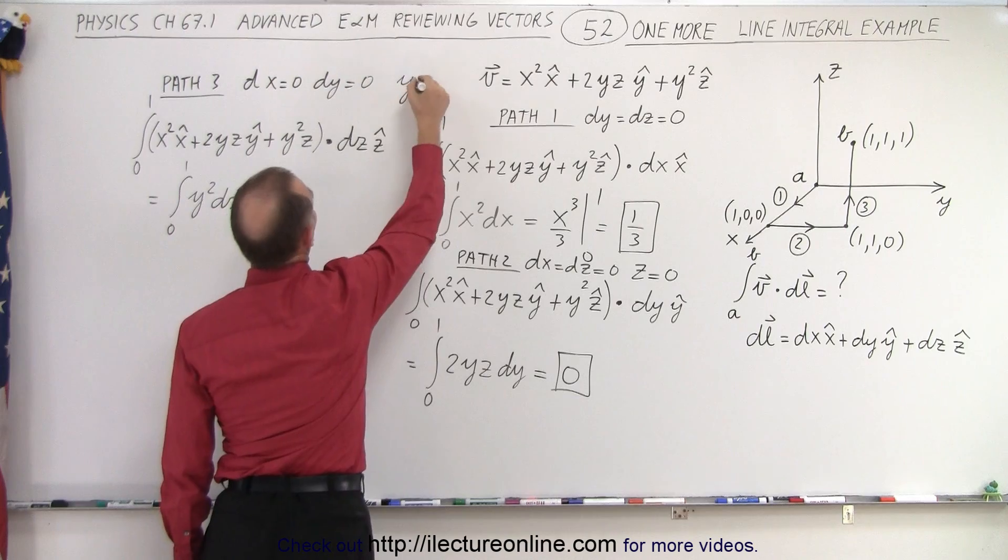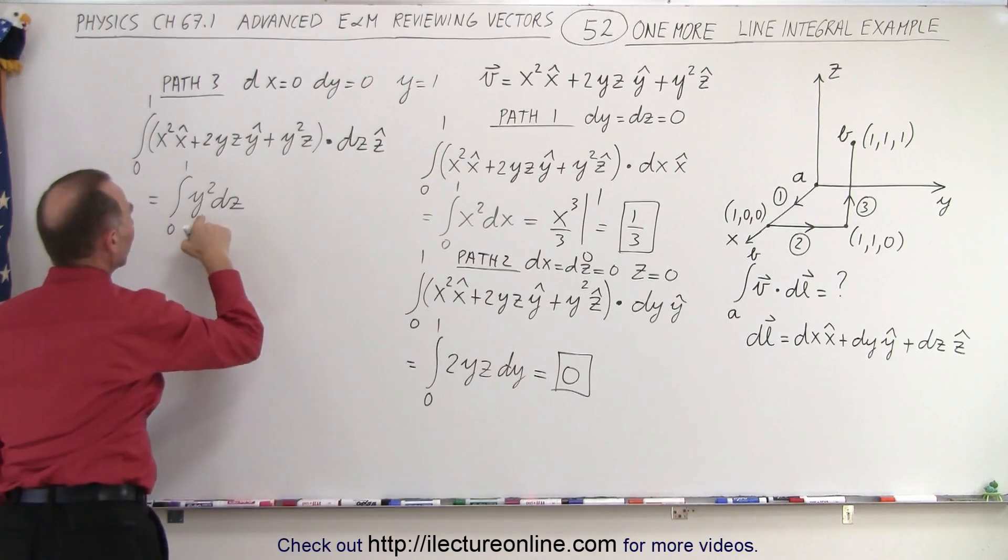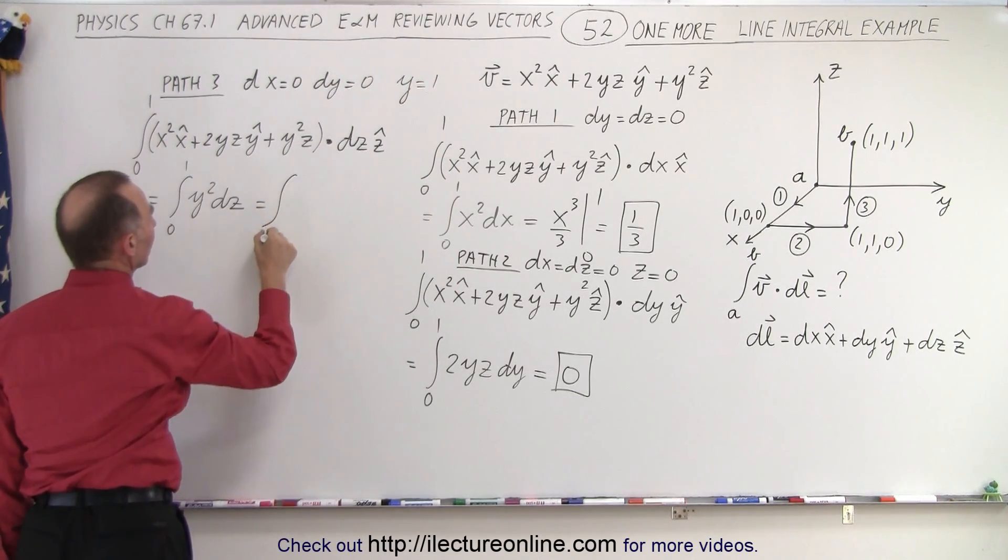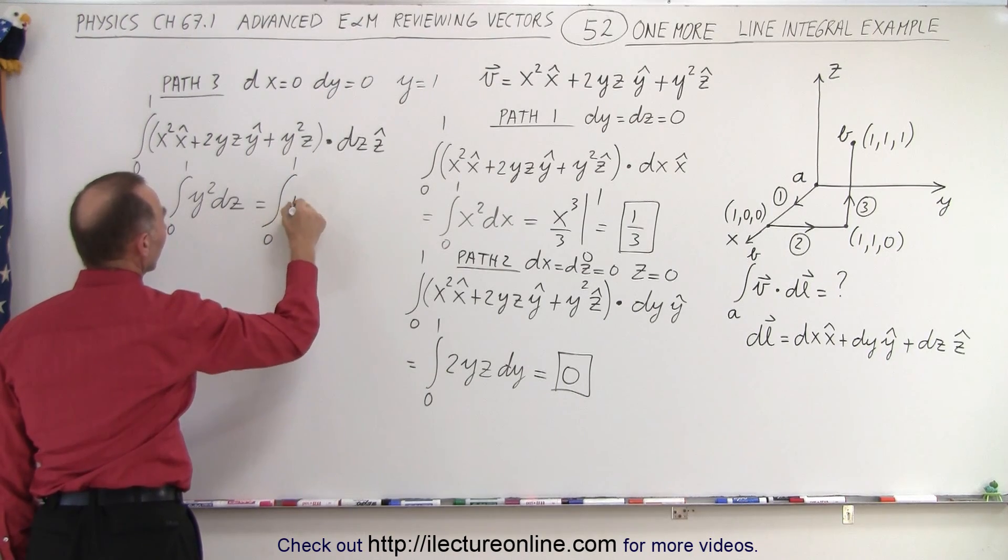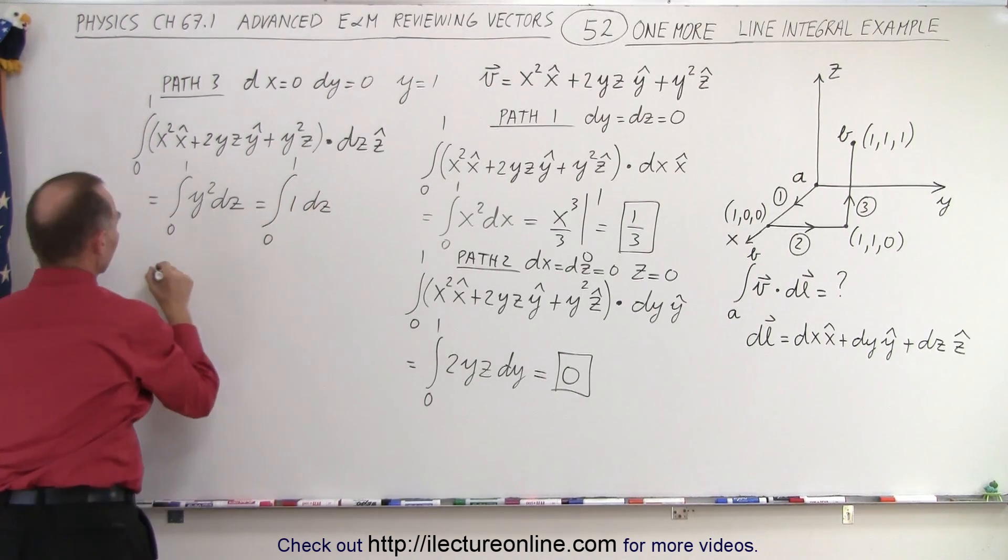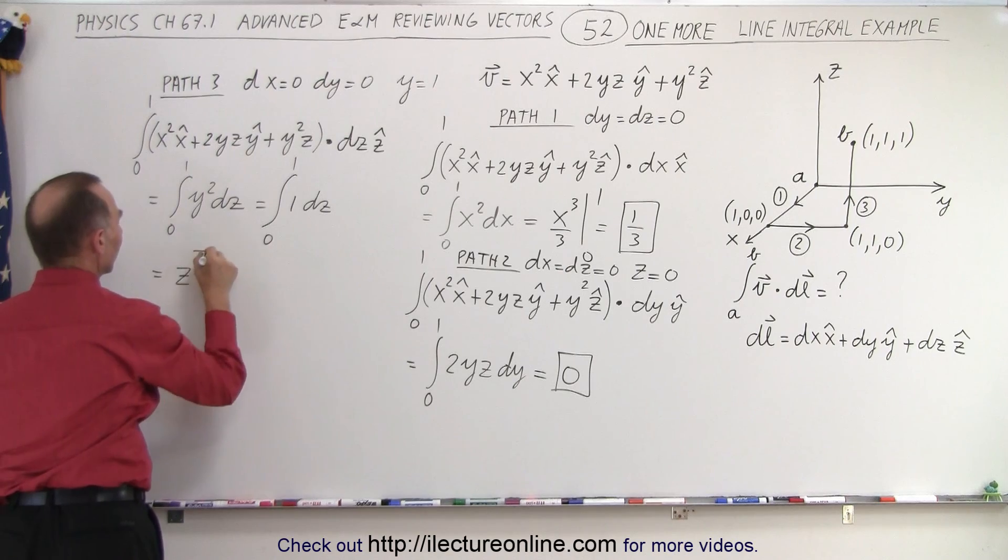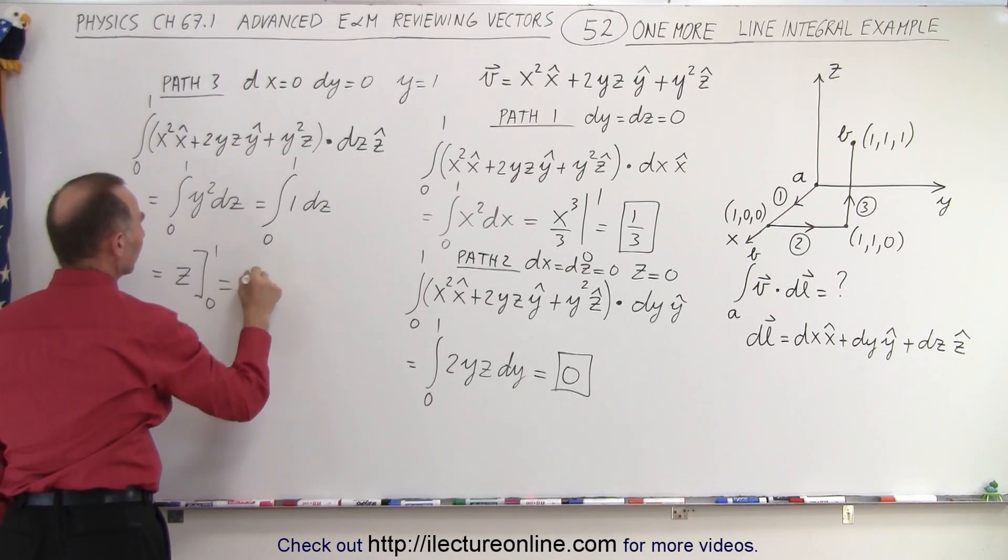So we can say that for path 3, y is equal to 1. Replace y by that. So this is equal to integral from 0 to 1 of 1 squared, or simply 1 times dz. And so this is equal to z evaluated from 0 to 1, which is 1.